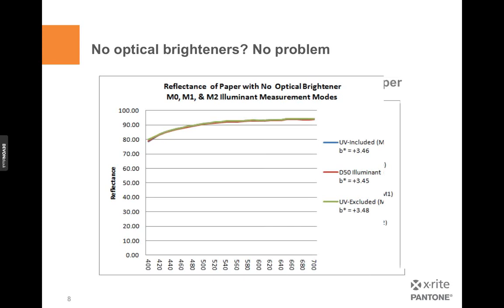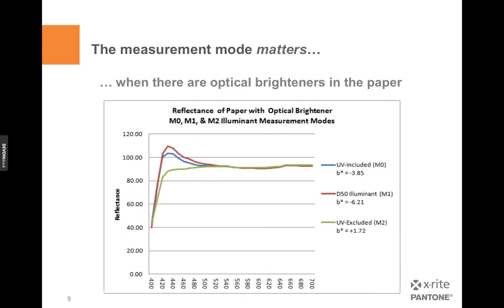But if I take a paper and add a lot of brighteners to it, suddenly the story changes. If we cut the UV, we still have that nice flat curve we had before. But then depending on the amount of UV excitation in the illuminant, the look of the paper changes. So we have two different curves going on here based on how much UV content is in those bulbs. This reflects the same thing we saw with our eyes in those viewing booth pictures — as we change the amount of UV, the instrument sees it differently, and our eyes see it differently as well.